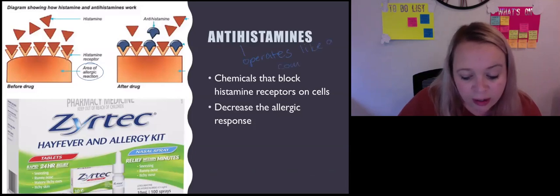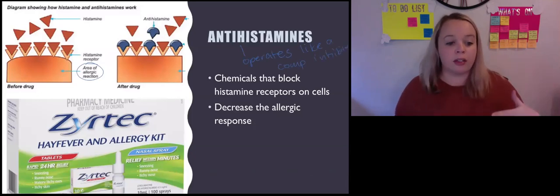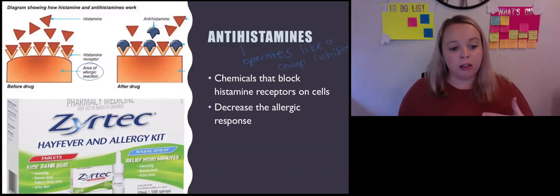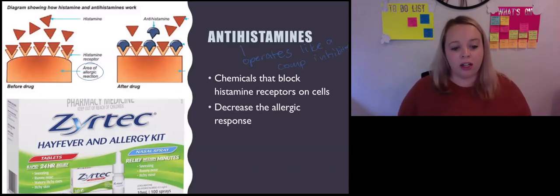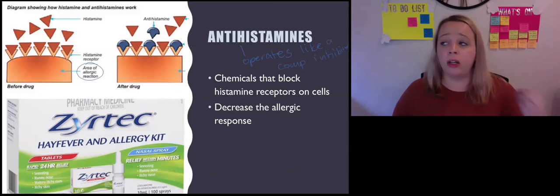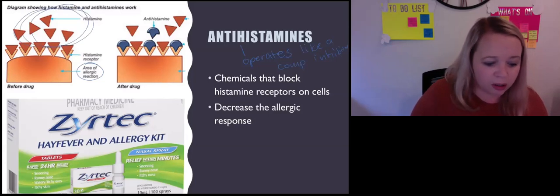What it does is it binds to some of the sites that histamine will bind to, and therefore it stops the histamine from binding and the reaction isn't as severe. This is why they tell you to take the antihistamine early. If you try and take it after you've released the histamine and been exposed to the pollen, it might not be able to bind.